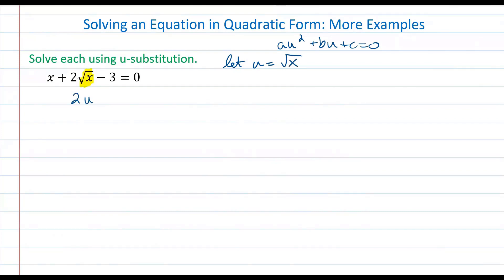Now that replaces the square root of x with u, but how do we deal with the fact that our first term is just x and it's not in terms of the square root of x? So what we're going to do here is we're actually going to take that u and we're going to square it, which means we're also going to square the square root of x, which gives us u squared is equal to x. So we can actually replace that first term x with u squared and then we still have minus 3 is equal to 0.